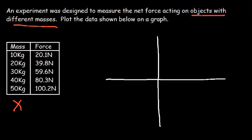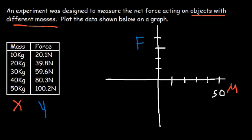The quantity that we're measuring — that's the dependent variable. We want to see how the force depends on the mass. Therefore, force should be put on the y-axis, and we should plot the mass on the x-axis. We're going to adjust values by 10 on the x-axis, and on the y-axis, each mark will represent 20. So this is about 100.